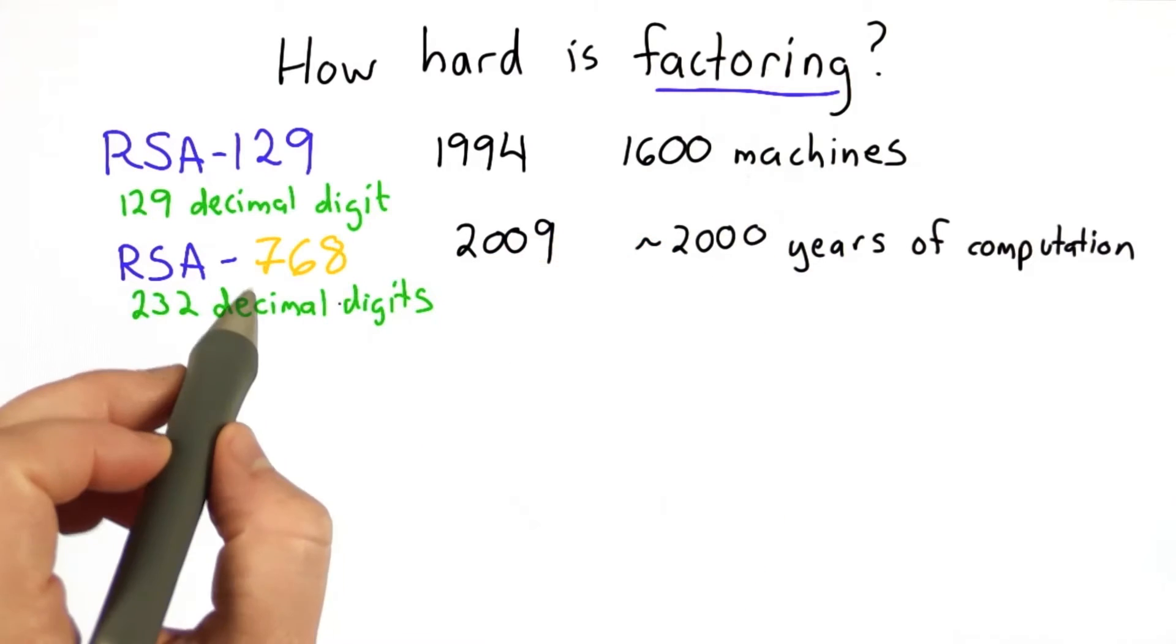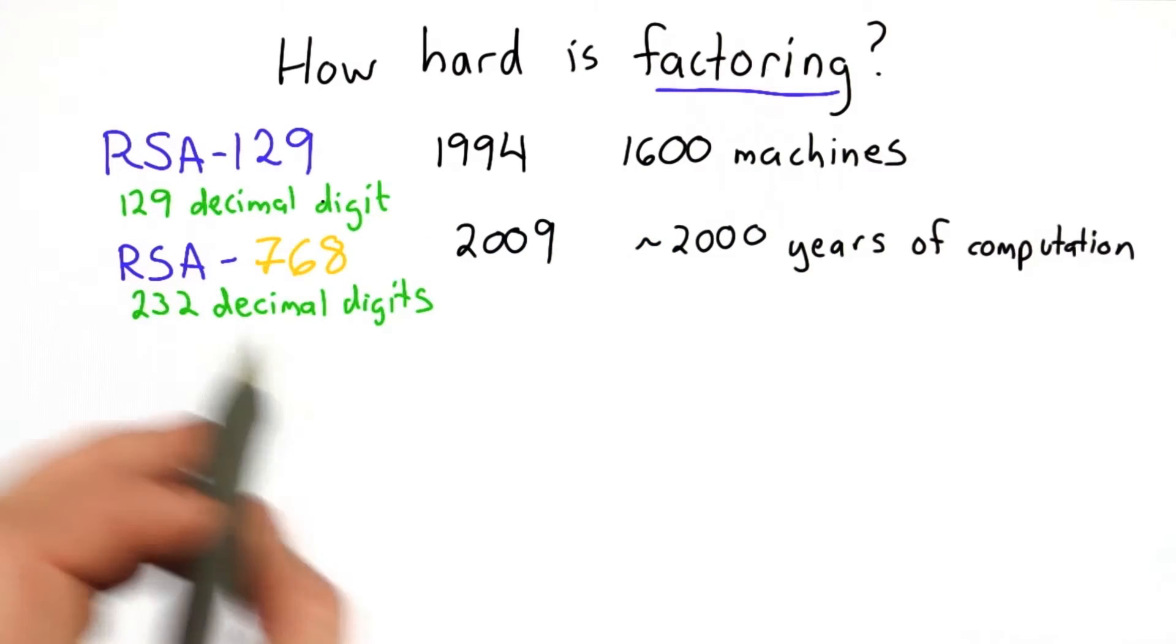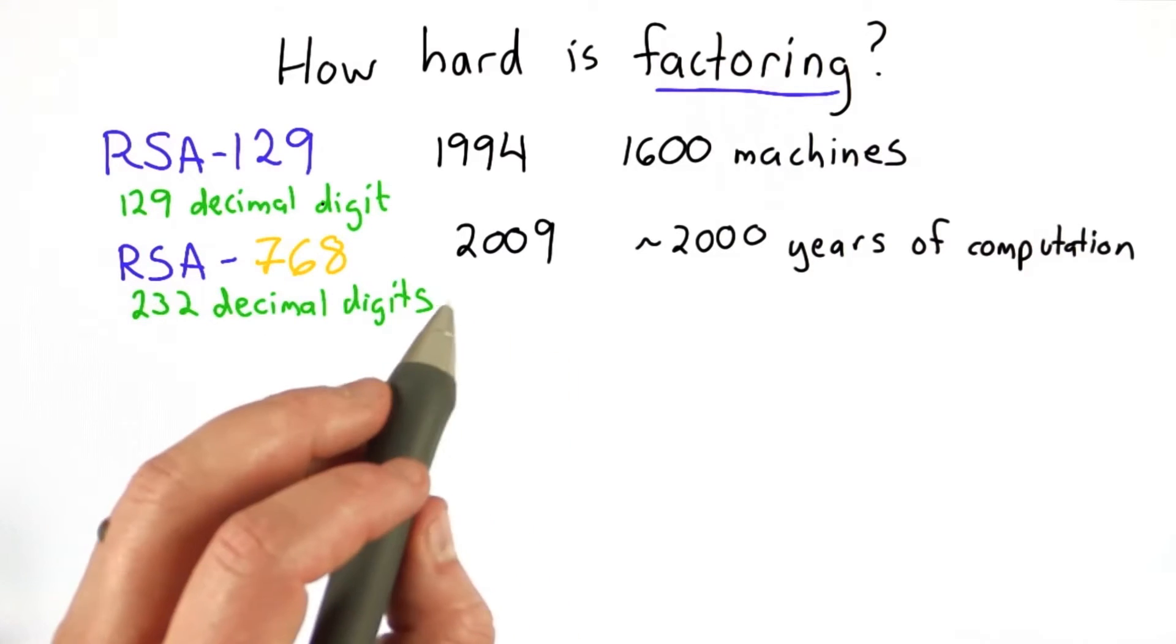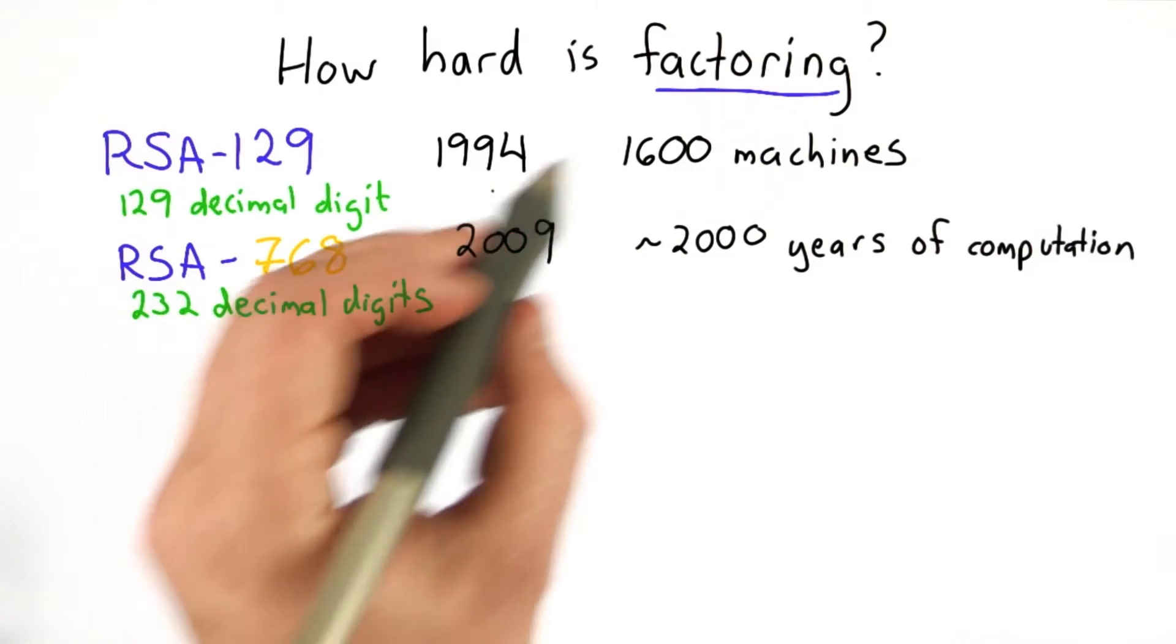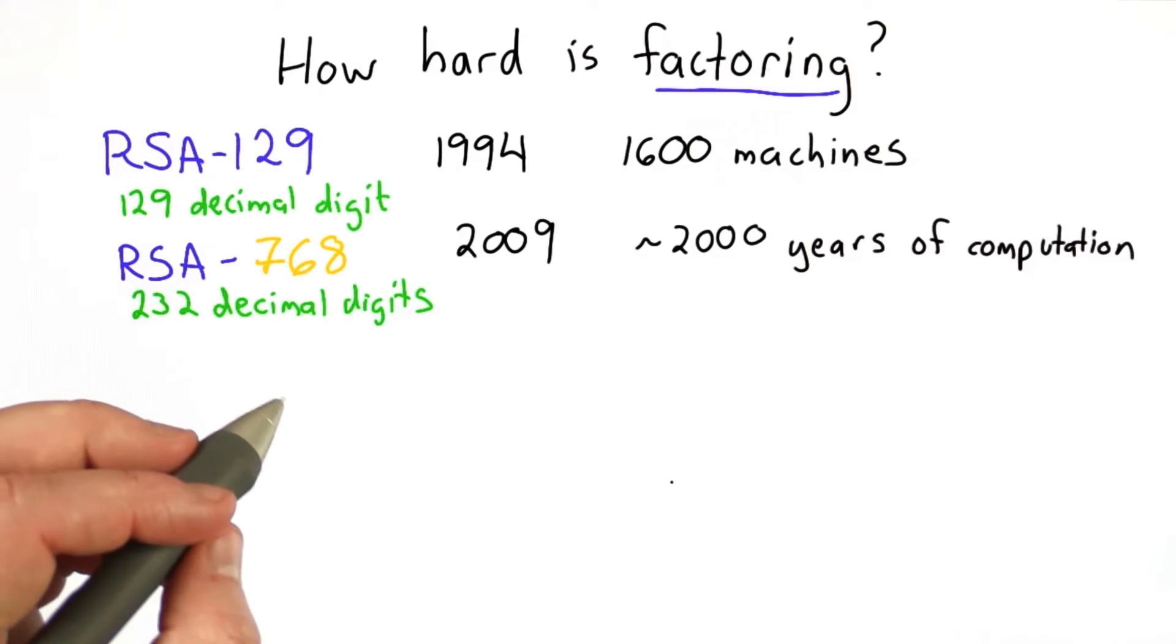If we want to know that RSA is secure, we need to understand how the cost of factoring depends on the size of the numbers that we need to factor. We'd like to know that if we pick a large enough key, even an adversary with a large amount of computational power, and as the years go on, adversaries will have more and more power, still won't be able to factor the number and break the RSA.